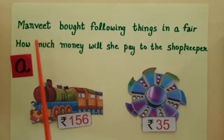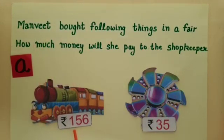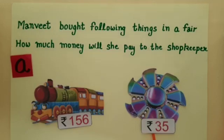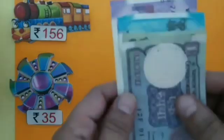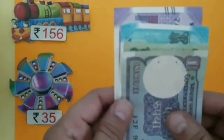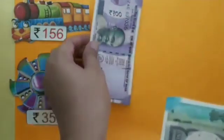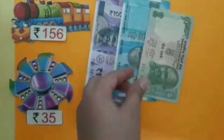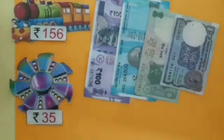Manveet bought a toy train whose cost is rupees 156 and a spinner whose cost is rupees 35. The cost of toy train is rupees 156, so Manveet will take out rupees 156 from her pocket: 100, 150, 155 and 156.